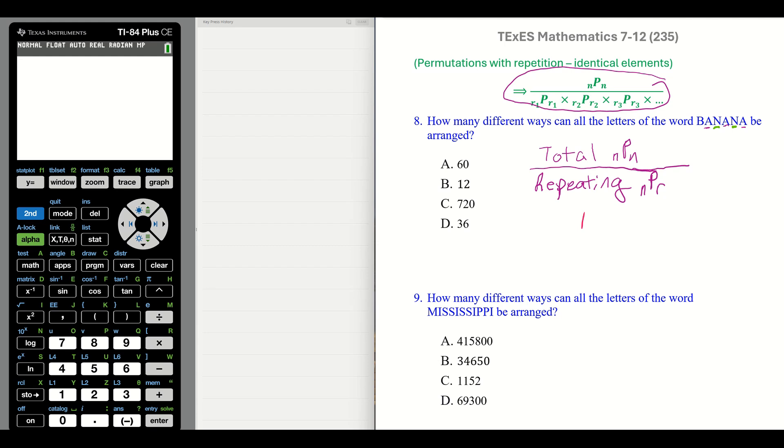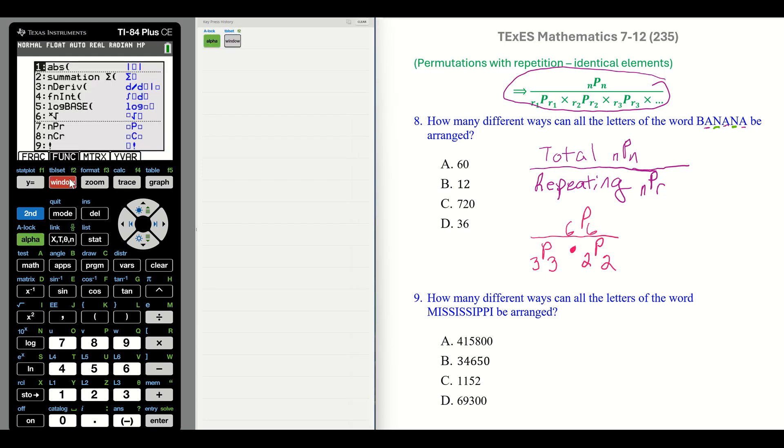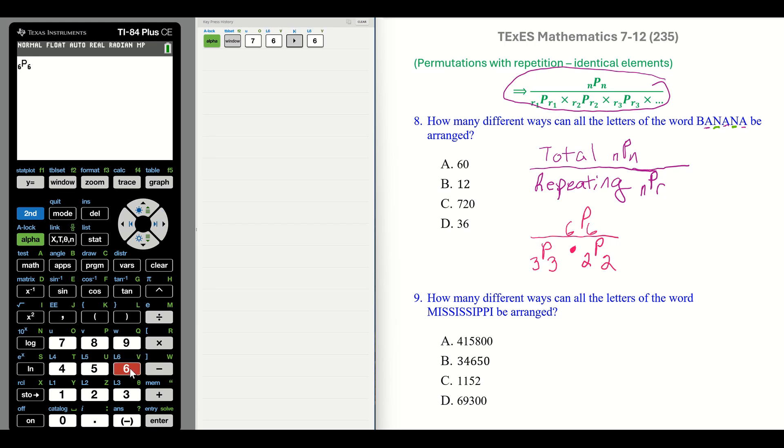So what should this actually look like? We're going to have the permutation. We have 6 out of 6 over our A, so that's going to be 3 out of 3 times the N, which is 2 out of 2. Let's put this in our calculator. Alpha, window, 7. And we said 6 out of 6.